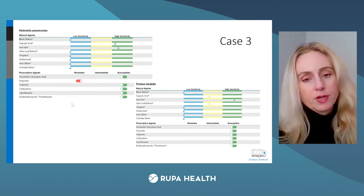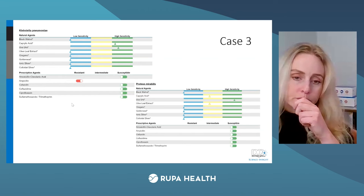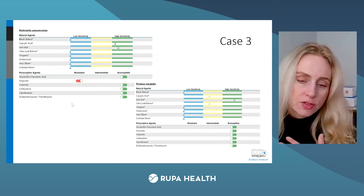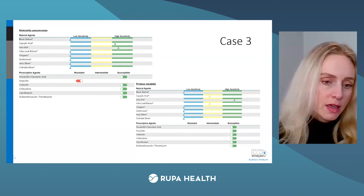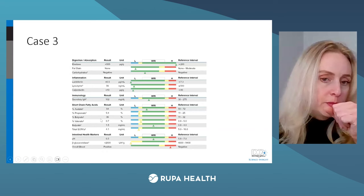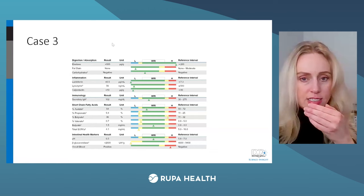Are butyrate-producing bacteria the ones we link to serotonin production? Yes and no — there is information regarding microbiome diversity and serotonin as well. We do not offer eosinophilic protein X, but we do have the immunology marker secretory IgA.